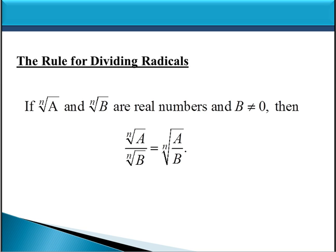We have a rule for dividing radicals that's very similar to the rule we have for multiplying radicals. This says that if the n-th root of a and the n-th root of b are both real numbers, and b is not equal to 0, then the n-th root of a divided by the n-th root of b can be rewritten as the n-th root of a divided by b. So we can take two separate radicals separated by division and rewrite it as a single radical, with division between the radicands underneath that radical sign.